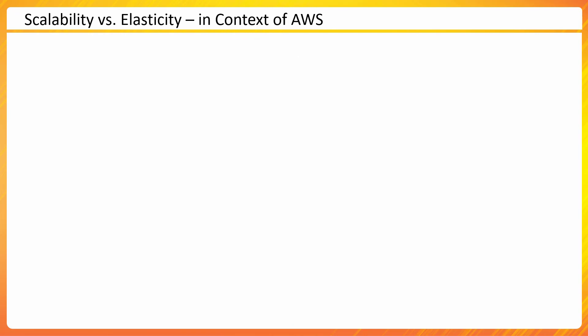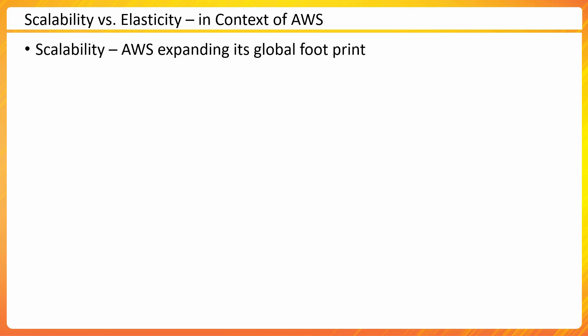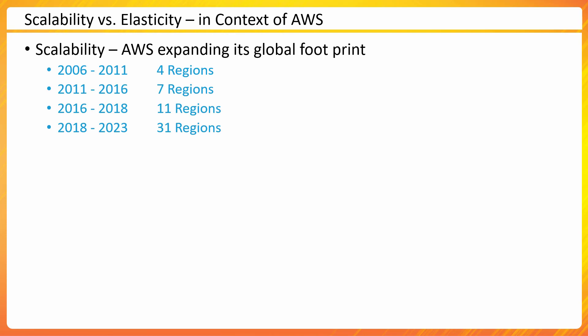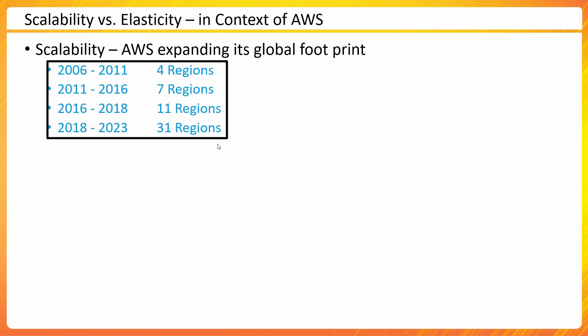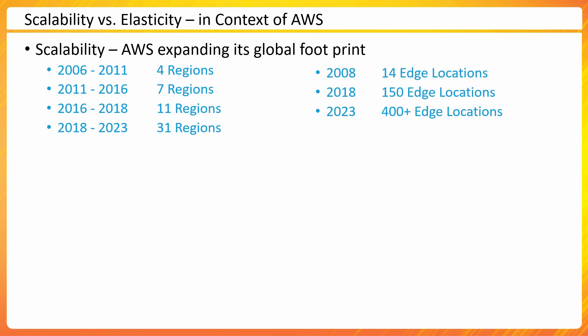Let me give a basic example. If I talk about AWS expanding its global footprint — in 2006 AWS started with 4 regions, then by 2011 it was 7 regions, by 2016 11 regions, and by 2018 to 2023 there are currently 31 operational regions. This is a strategic move, ensuring they open regions where there is demand for cloud computing services.